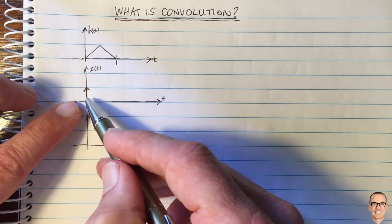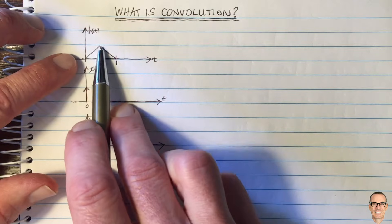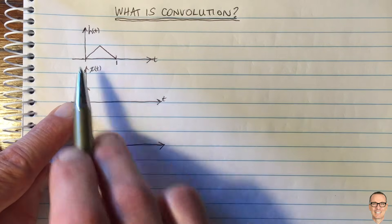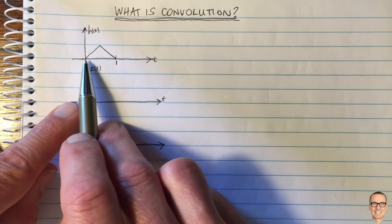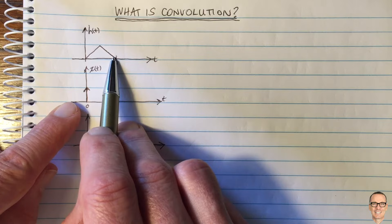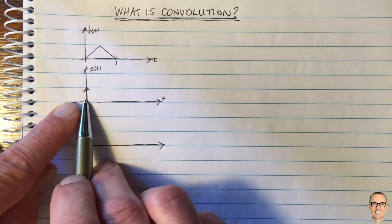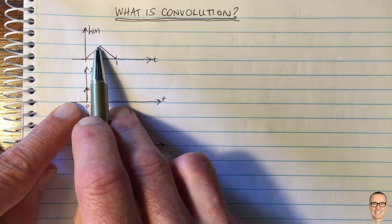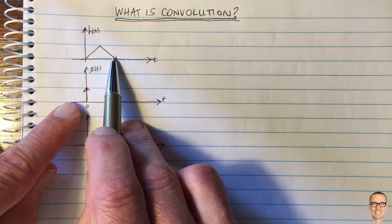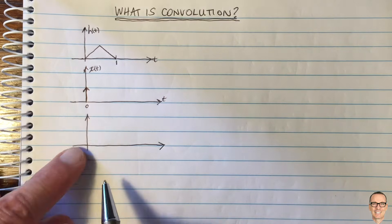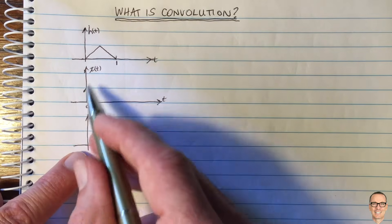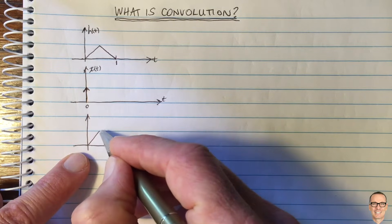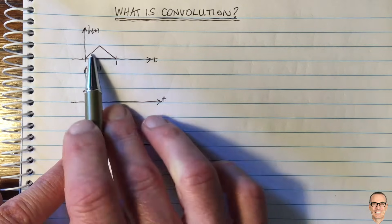It often helps to think of this as what we call the impulse response of a linear system, and this is the input. Think of a system — imagine that this is the response of that system, the output of that system, if you put a short spike of energy into that system. Maybe it ramps up its output and then its output dies down. Well if that was the case, when we put this input into this system you're going to get this output — exactly the impulse response.